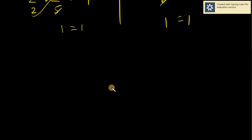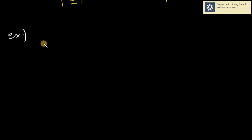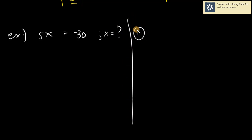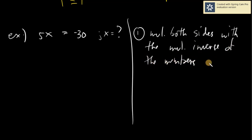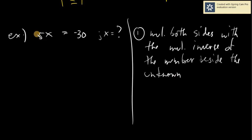Now, how do we apply that on our given? Let's have our first example. Say we have 5x equals negative 30. What should be the value of x? Rule number 1: I multiply both sides with the multiplicative inverse of the number beside the unknown. Our unknown is x. What is the number beside x? It's 5. What is the inverse of 5? The inverse of 5 is 1/5. So I multiply 1/5 on both sides.